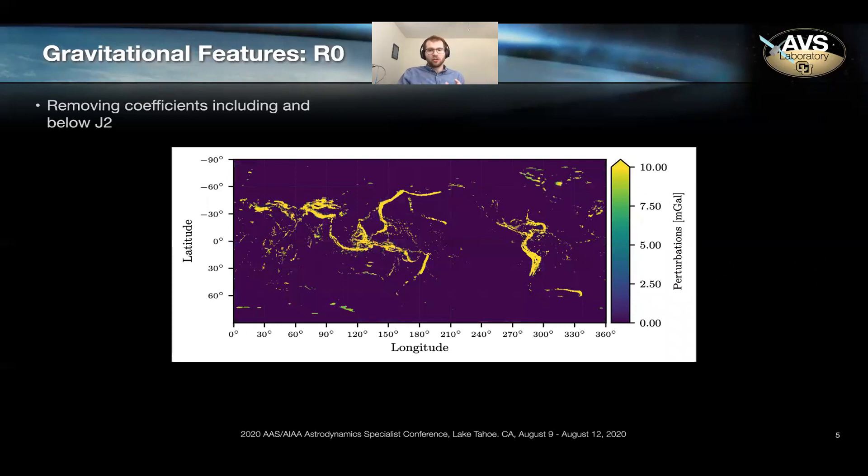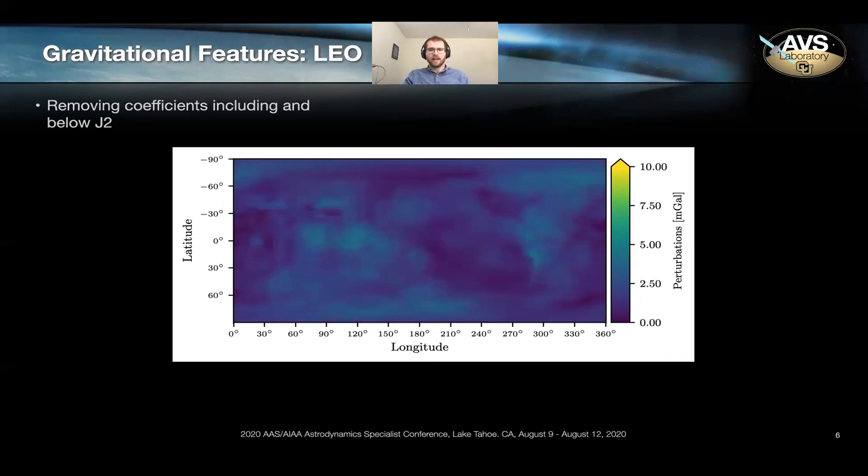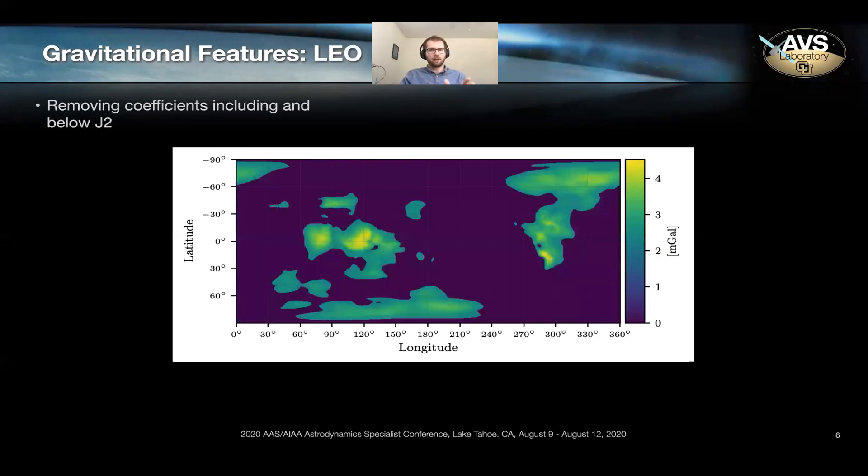It's worth noting that these features do attenuate at higher altitudes. These are projected at the circumscribing sphere of Earth. If you look at LEO, the features attenuate. We're going to rescale here again, clip that mask of features. They're a little bit broader and smoother, but still present. You can still see the Andes and Himalayas are our major perturbations.